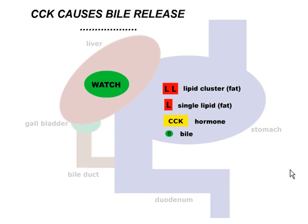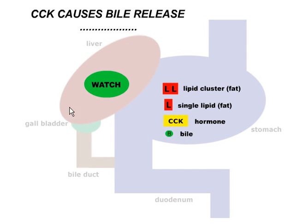First of all, a little bit of digestive anatomy. We've got the stomach here, which has the esophagus that leads into it, and coming out is the first section of the small intestine, the duodenum. Off to the side is the liver here, and underneath the gallbladder, and then the bile duct, which leads from the gallbladder into the duodenum, and that's what carries the bile.